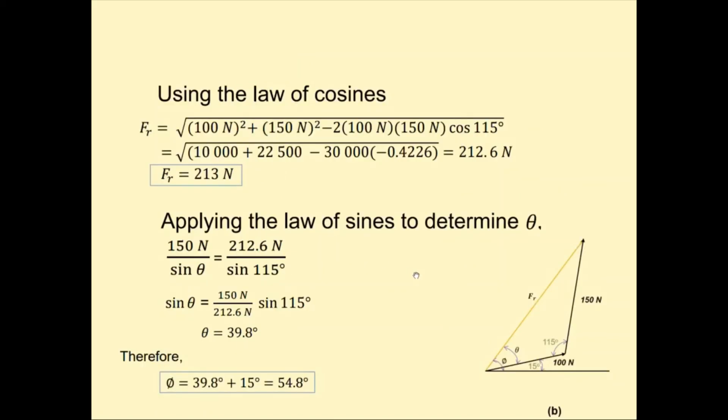Using the law of cosines, this side is what we're finding, which is FR. So, square root of 100 N, one side squared, plus 150 N squared, minus 2 multiplied by the given sides 100 and 150, multiplied by the cosine of its opposite angle, which is cosine 115 degrees. The answer is 212.6 Newtons, and we can round up to 213 N.